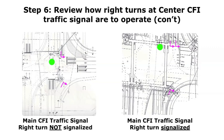I'm sharing two different diagrams here of actual CFI plans that were either constructed or scheduled to be constructed in the United States. The one on the left shows the right turn not signalized at the center CFI traffic signal — it's based on a yield movement. I have some concerns with that.